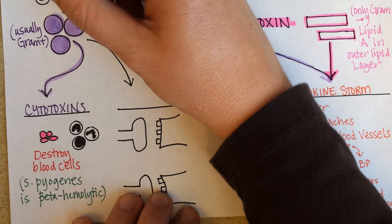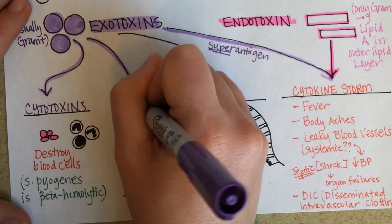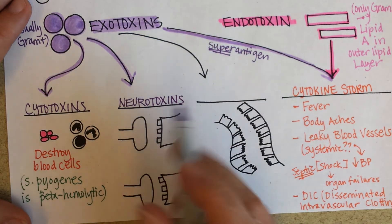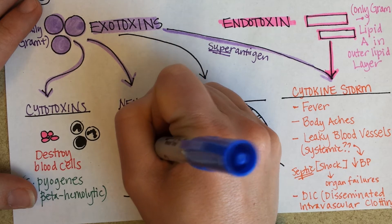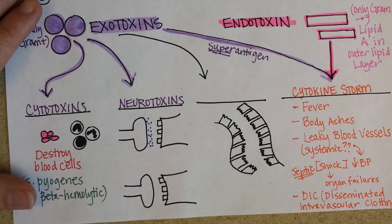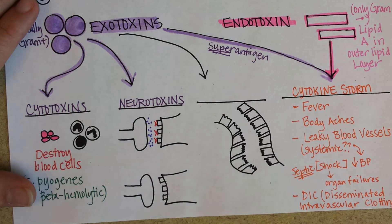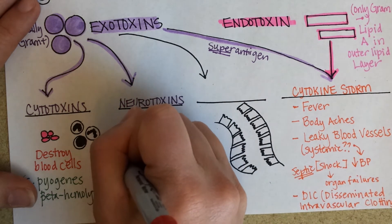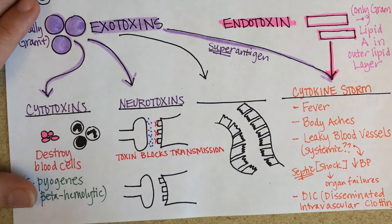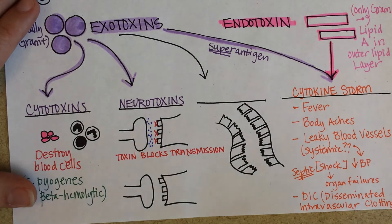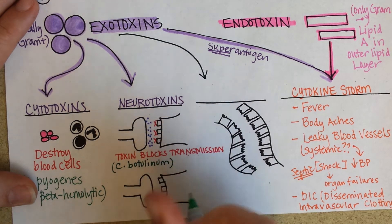Another kind of exotoxin that bacteria may make are neurotoxins — you can see right in there that it's going to affect nervous transmission. If you put a bunch of neurotransmitters in the synaptic cleft — that's what you're looking at here, this is a synapse — and block those receptors, the signal can't get across the synaptic cleft. So the toxin blocks transmission. Clostridium botulinum is an example here; it makes an exotoxin that blocks transmission.